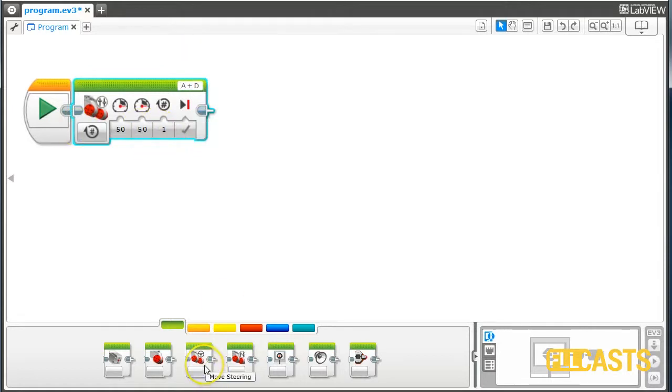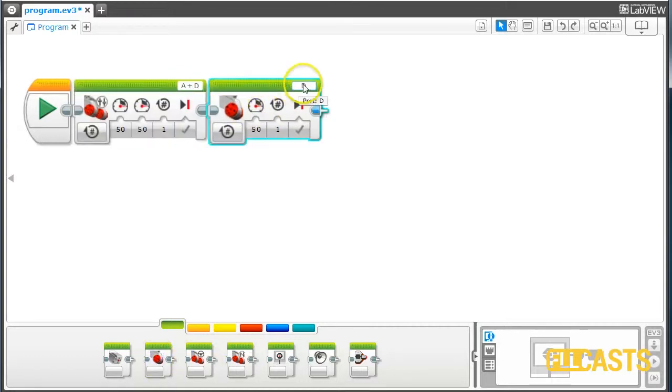Then I would like to turn with motor A. I will turn with motor A again for, let's say, for half a rotation. Let's keep it one and a half rotation so that you can see it well on the camera.